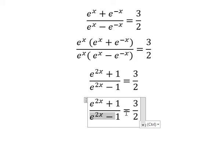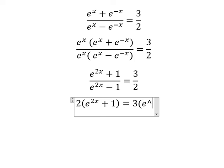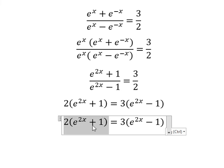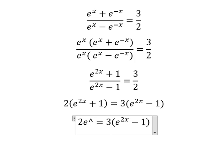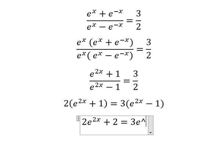I will put this one go to the right and number 2 go to the left. So this one we have 2 e to the power of 2x plus 2. This one we have 3 e to the power of 2x minus number 3.